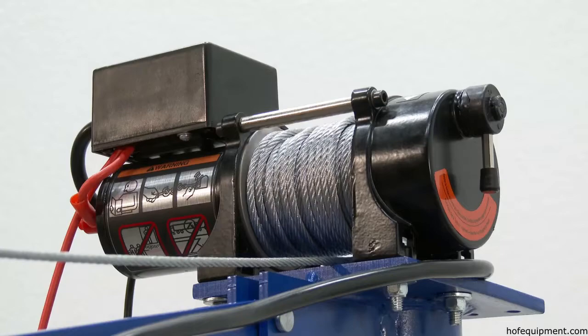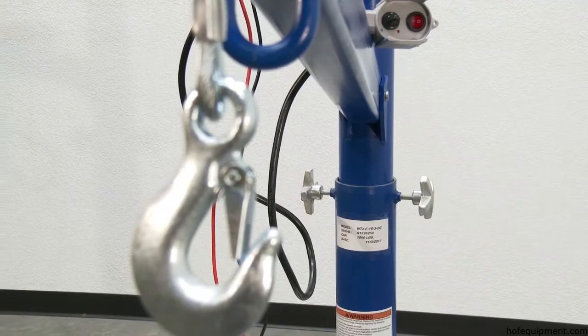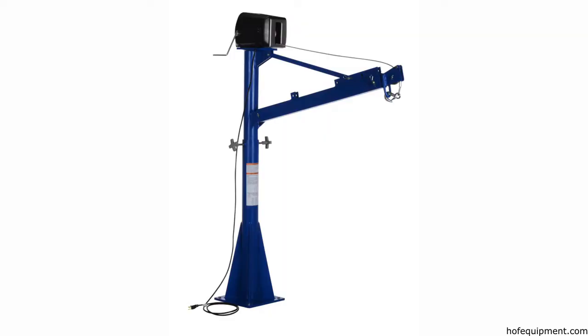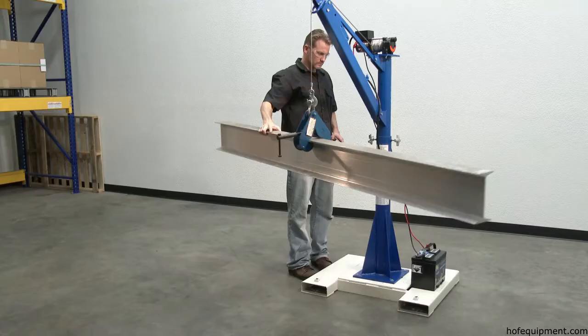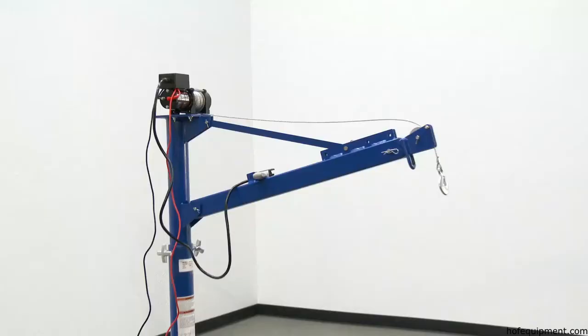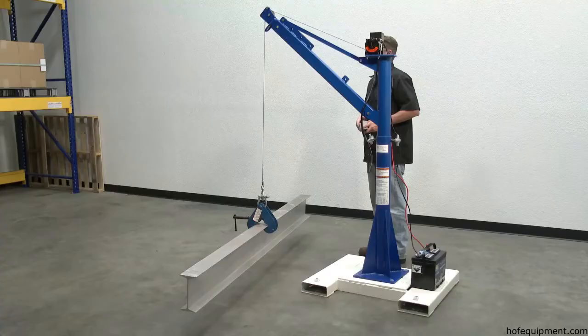DC models include 46 feet of 3/16 aircraft-grade wire rope with swivel hook and safety latch. AC units feature 25 feet of 7/32-inch cable. The economical model is your answer to material handling problems.